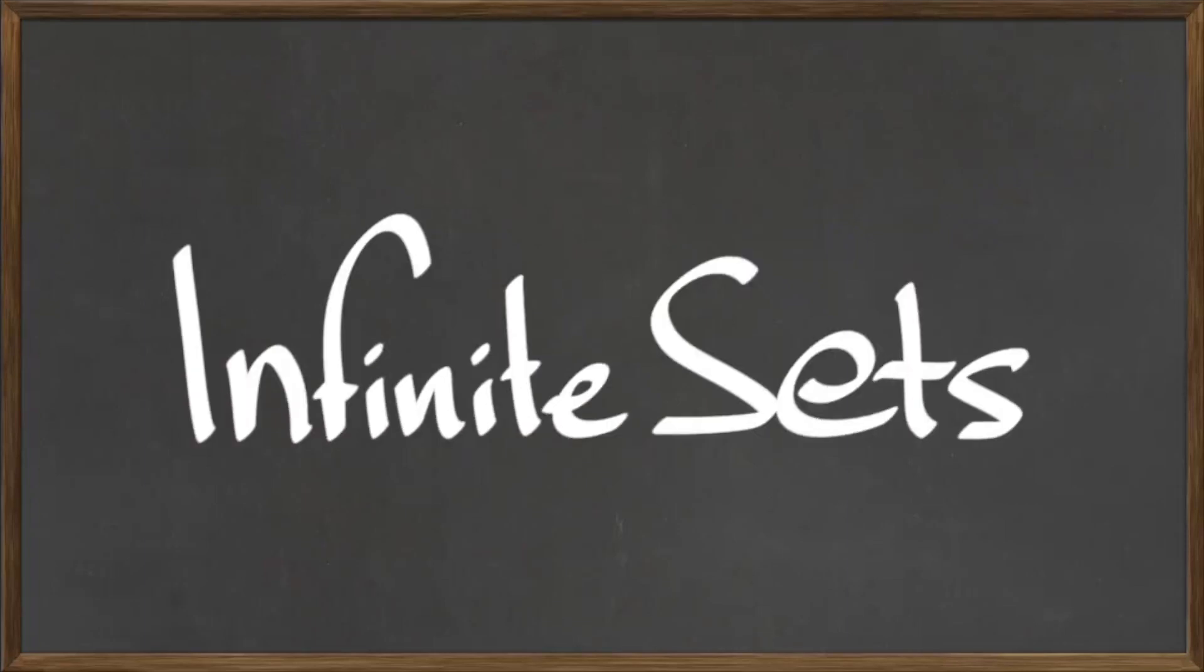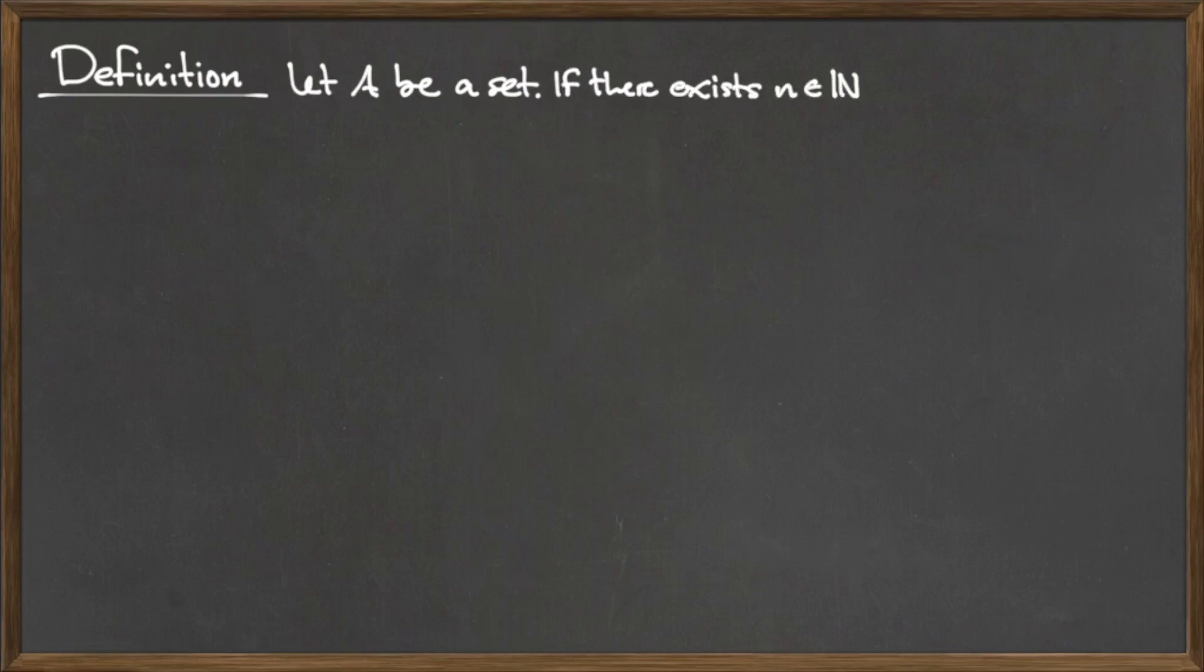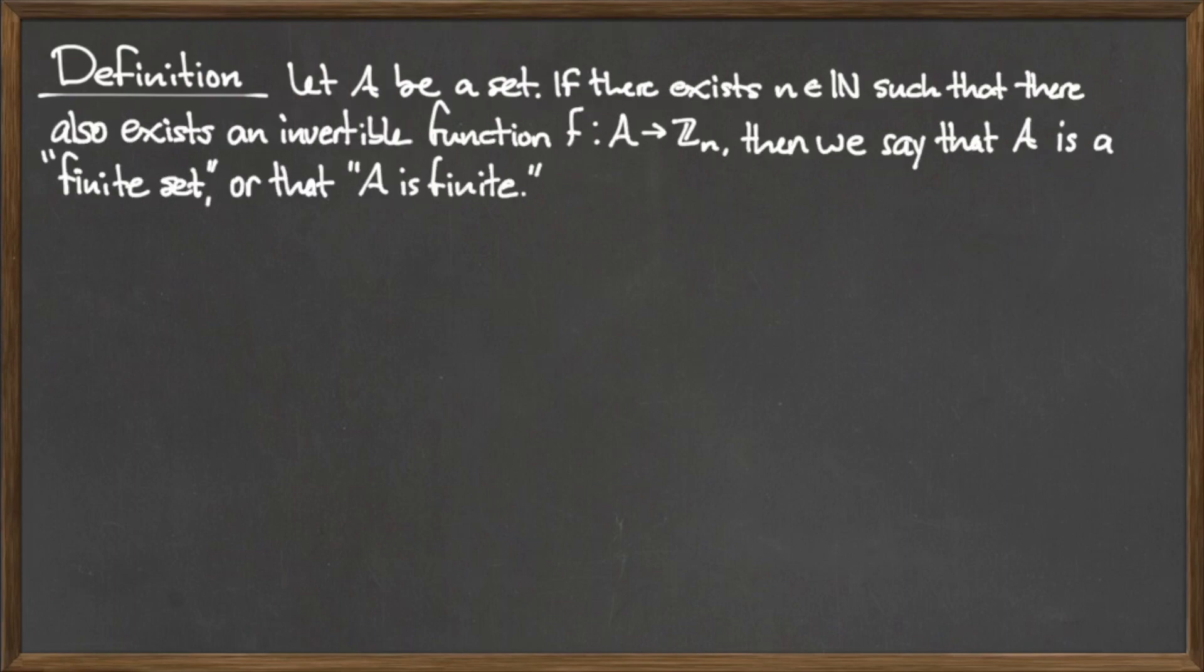In this video, we will discuss infinite sets. Let A be a set. If there exists a natural number n such that there also exists an invertible function f from the set A to the set Z mod n, then we say that A is a finite set, or equivalently, A is finite.